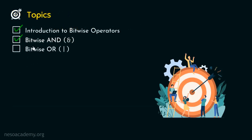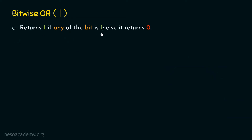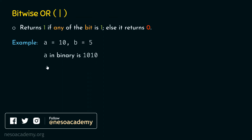Now we are ready to understand the next topic, which is the bitwise OR operator. The bitwise OR operator returns 1 if any of the bits is 1, else it returns 0. Here again we have A as 10 and B as 5. A in binary is 1010 and B in binary is 0101.